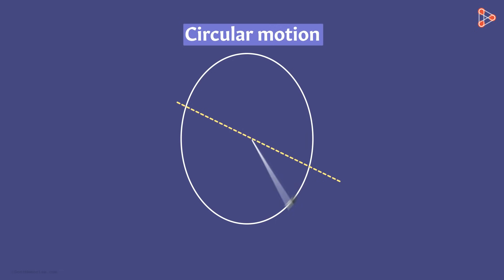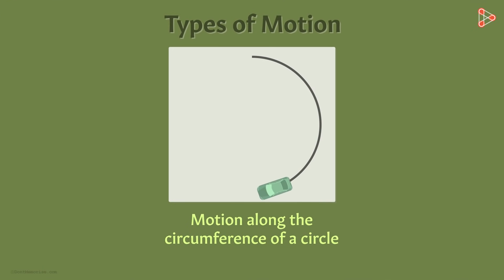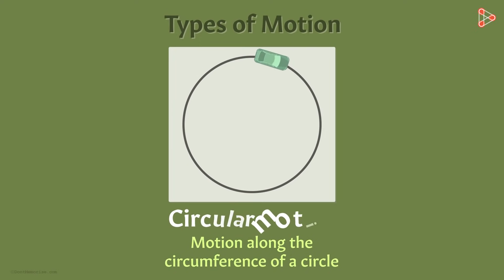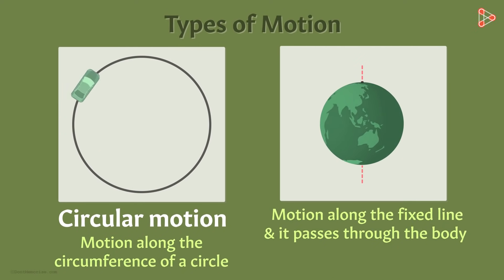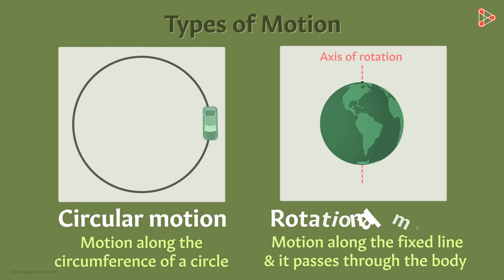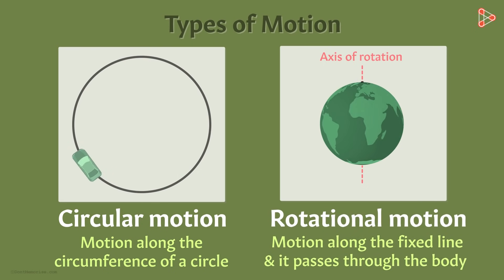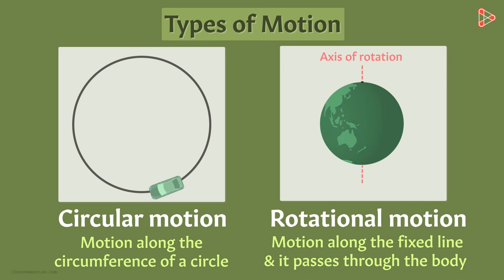So this is the difference between circular and rotational motion. If a body moves along the circumference of a circle, it is performing circular motion. If the body is spinning around a fixed line — the axis of rotation — and that axis passes through the body, it is undergoing rotational motion. In the next video, we will see one more type of motion. See you there!